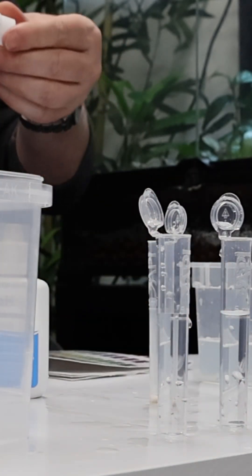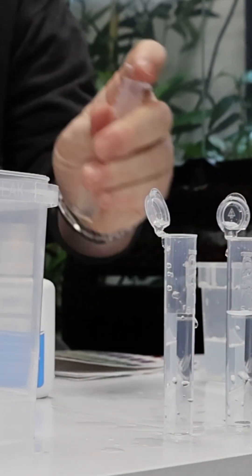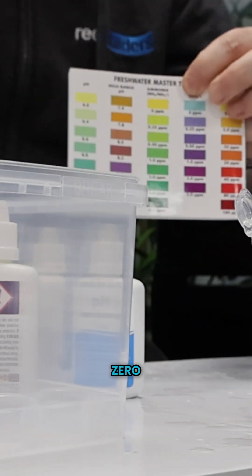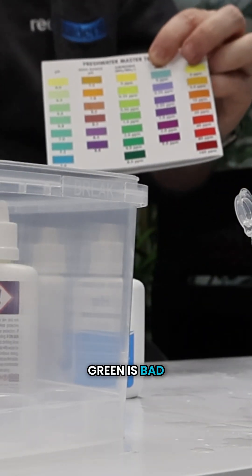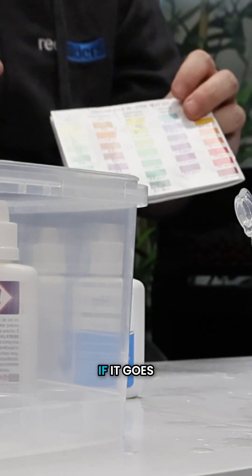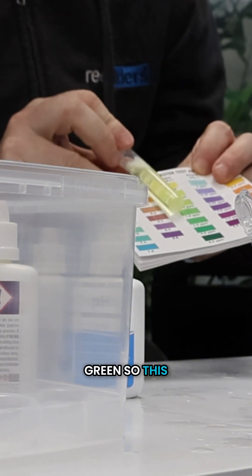Seven, eight. Give it a shake. And on our color chart, yellow is good—zero. Green is bad, green is very toxic and we'd have to take action to save our fish if it goes green. So this is good.